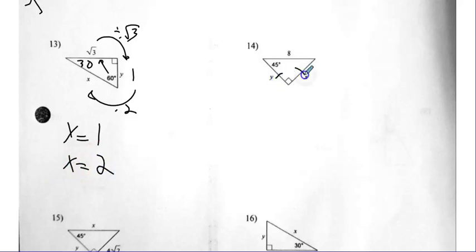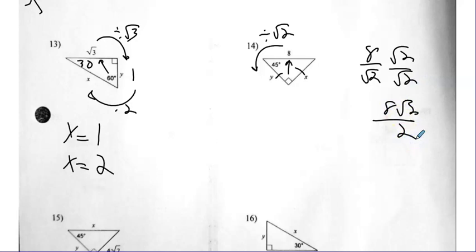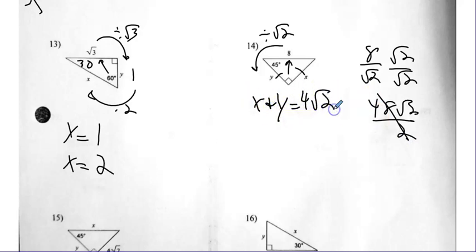Number fourteen — 45-45-90. We have the hypotenuse. So that means we are getting smaller and we divide by our magic radical two. So eight divided by radical two — we must rationalize. Eight radical two over two, which divides nicely into eight and gives us four. So X and Y are four radical two.